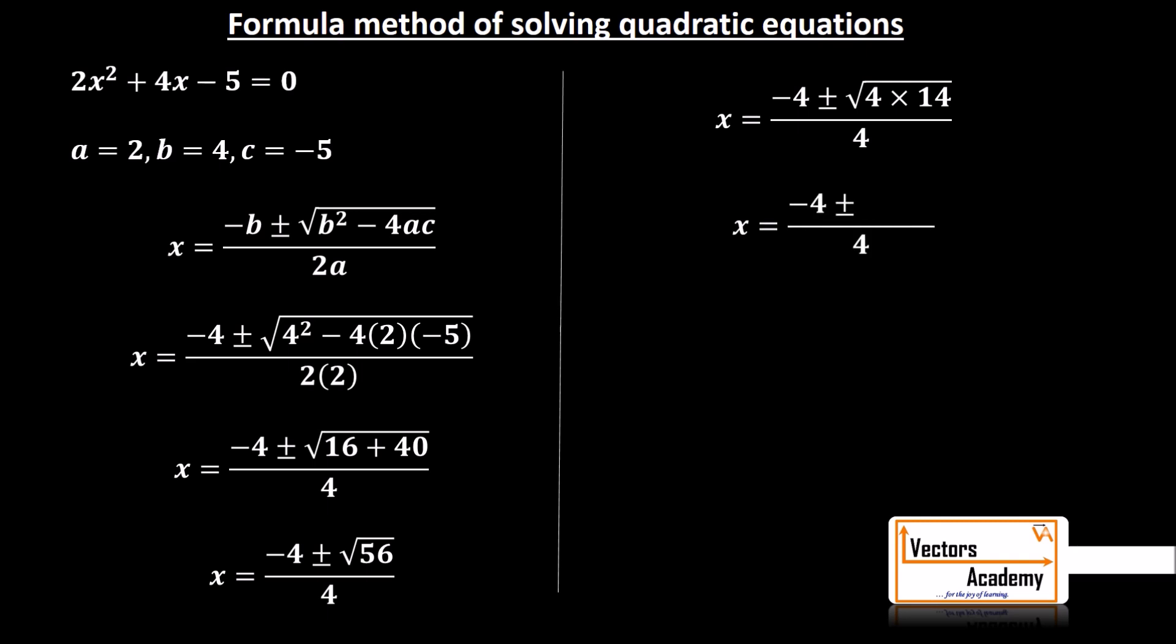So, I can write the equation as minus 4 plus minus 2 root 14 upon 4. Now, you can see in the numerator, both the terms have 2 as a common factor. So, I can take 2 common from both of them.